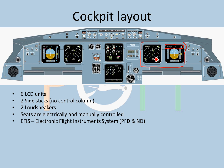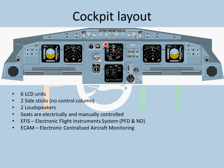ECAM — Electronic Centralized Aircraft Monitoring — consists of two LCD screens. ECAM has your engine parameters and system parameters, and it also shows checklists in case of an abnormal procedure. There's an ECP — ECAM Control Panel — on the pedestal, where you can select a specific system; that system then displays on the ECAM so you can check whether it is working normally.